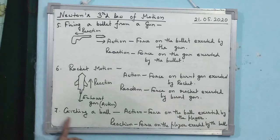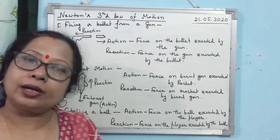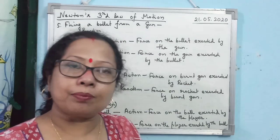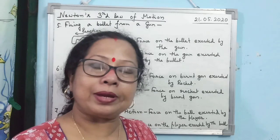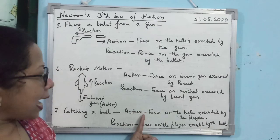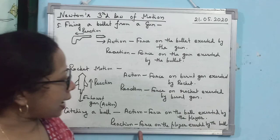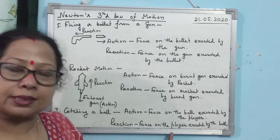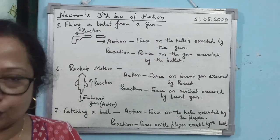Next example is catching a ball. When a cricketer is catching the ball, the cricketer is stopping the ball by applying a force on it — that is action. The ball applies an opposite force on the cricketer's hand — that is reaction. Action: force on the ball exerted by the player. Reaction: force on the player's hand exerted by the ball.